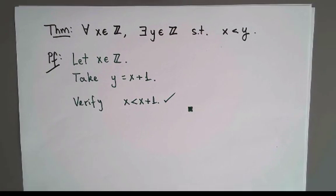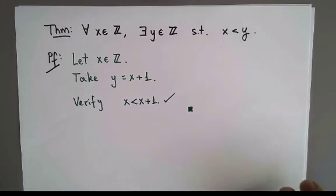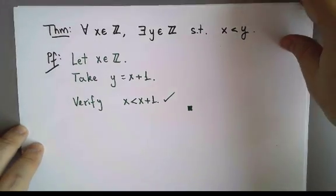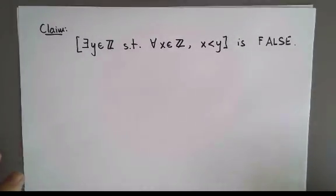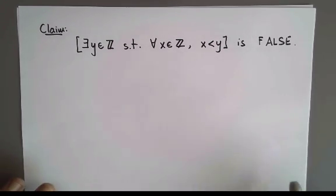So that is how we would prove the first statement, the one that was true. To finish, let's look at the second statement and see how we would prove that it is false. Here is the claim: the second statement is false. To prove that this is false, we could do a proof by contradiction — that would work fine.